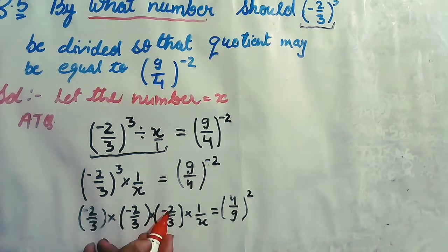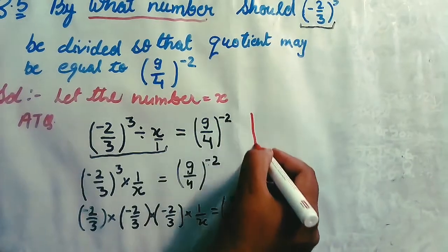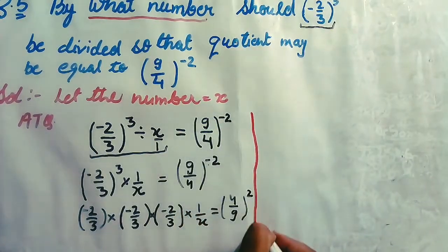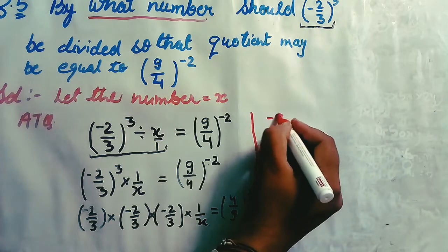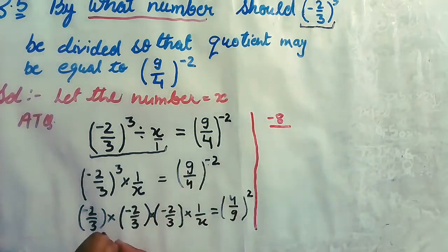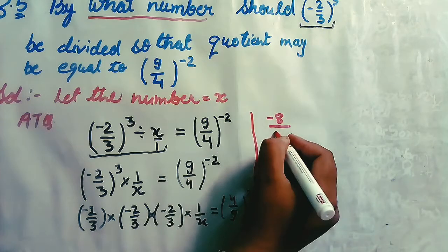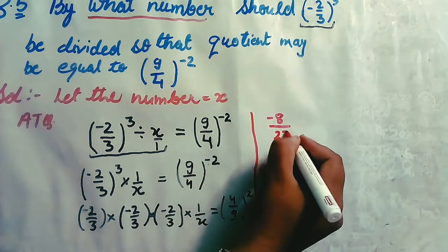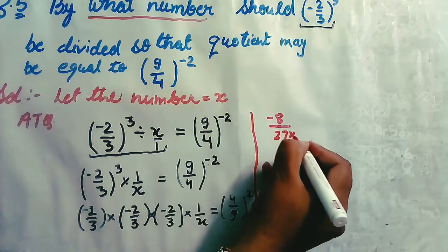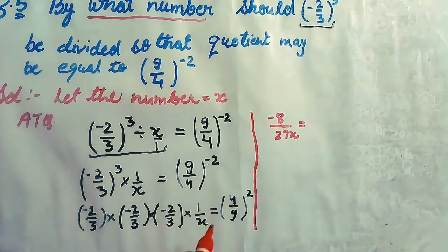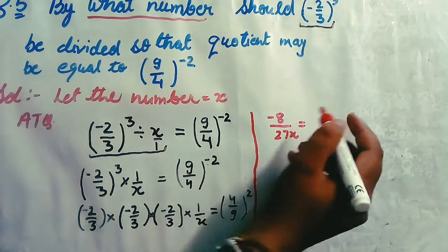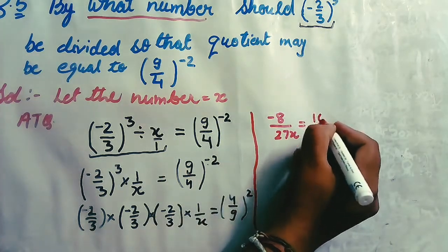Simplify both sides: 2×2×2 = 8 and since there are three negative signs it becomes -8; 3×3×3 = 27, so the left side gives -8/(27x). On the right side, 4² = 16 and 9² = 81, giving 16/81.